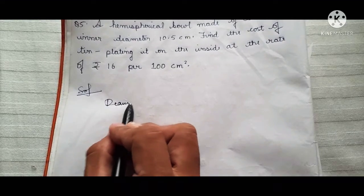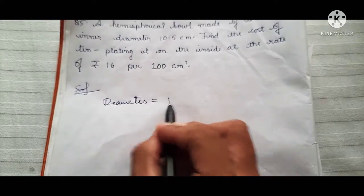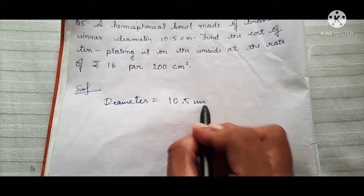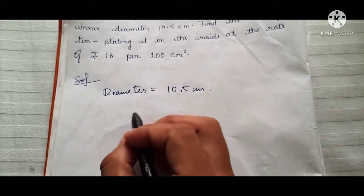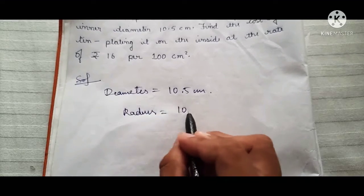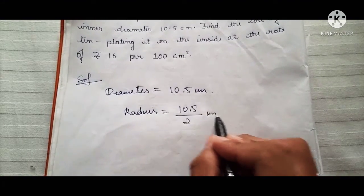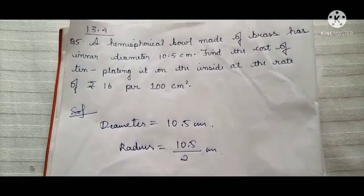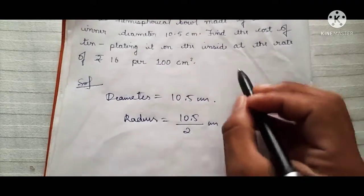The diameter is given here, 10.5 centimeters. Okay, so diameter we need to convert into a radius. Okay, so if we convert into a radius it will be 10.5 by 2.